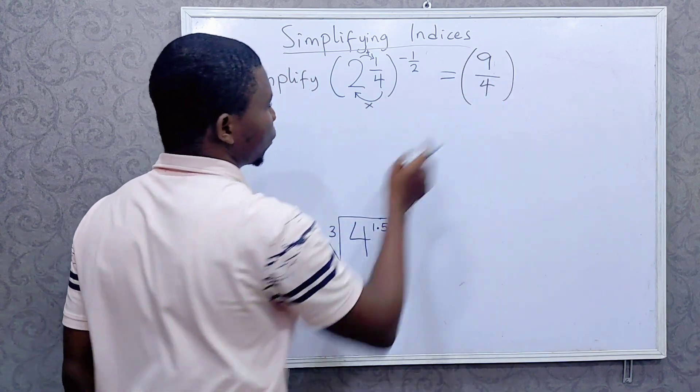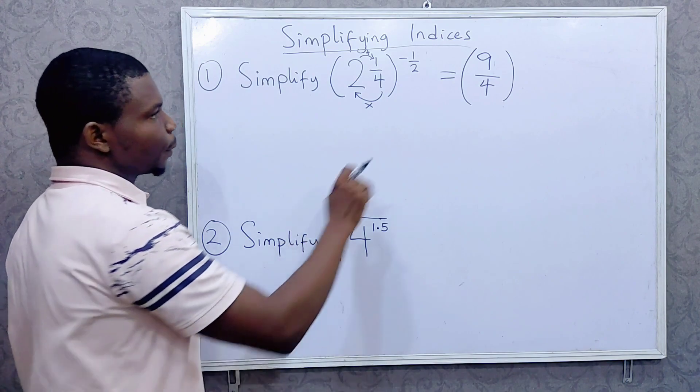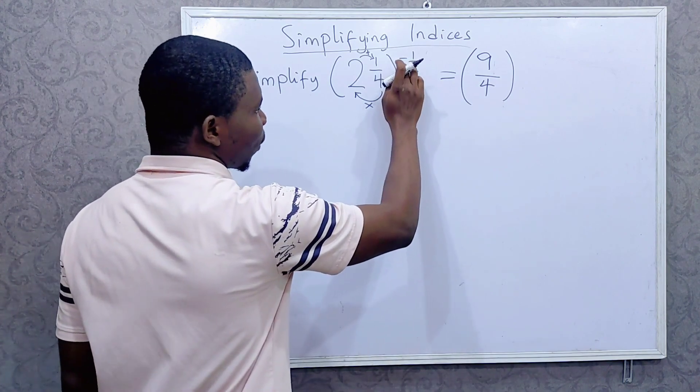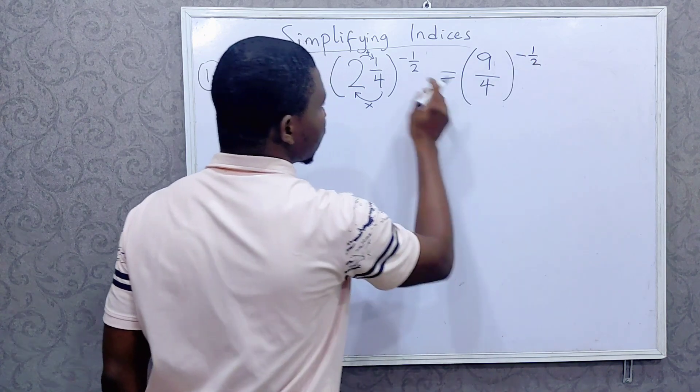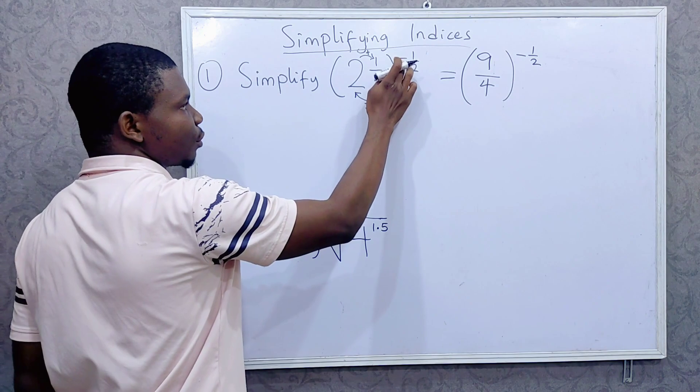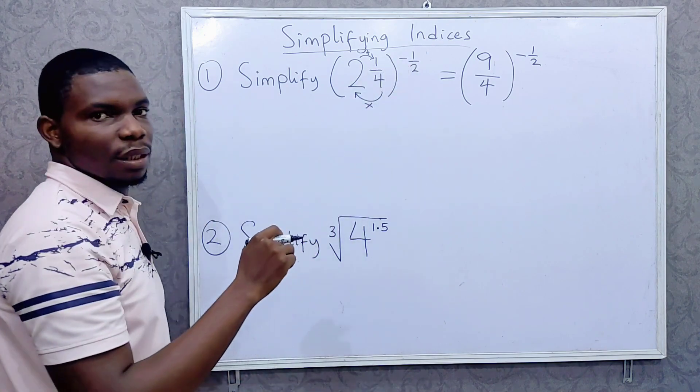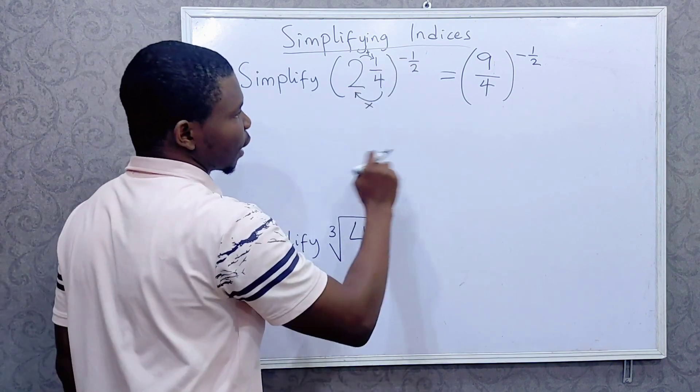This as an improper fraction. Then the power, this is raised to the power minus 1 over 2. The power, if there's a negative to it, you want to remove it. So we're going to remove that negative sign.